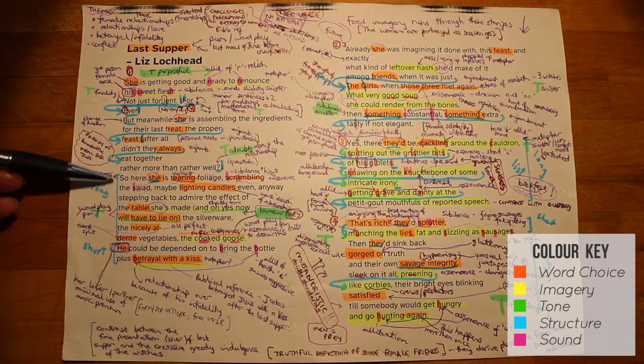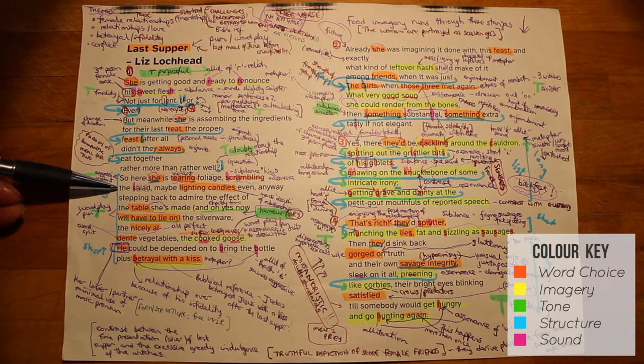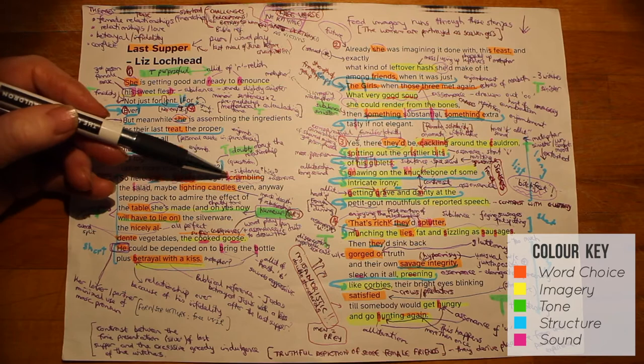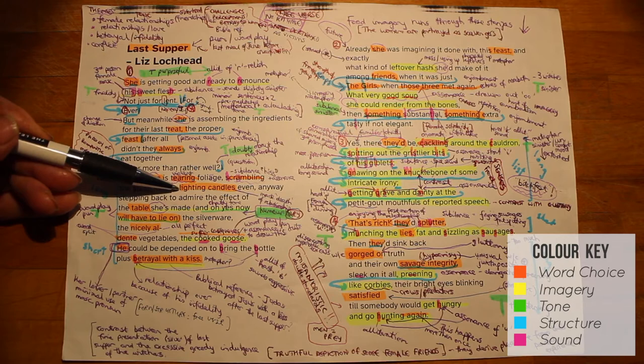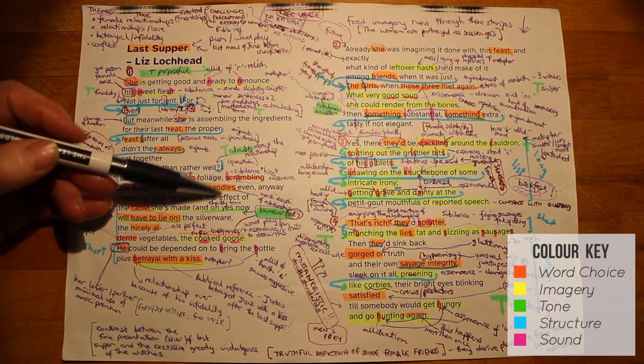Moving on, the next part of the stanza shows that she is taking her vengeance out almost on the food initially, in that she's tearing the foliage, scrambling the salad. The use of sibilance here helps to add to this feeling of violence and disorder, and the hiss is almost sinister. There's also assonance with the A sound here. The reference to candles is interesting because obviously a romantic meal would have candles with it, but also it could be a candle lit in memory of the death of the relationship.